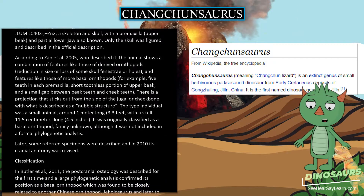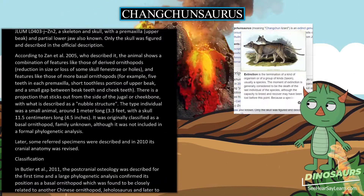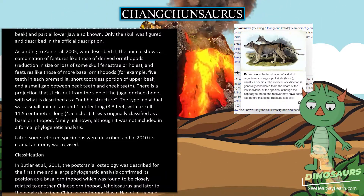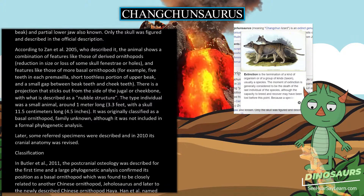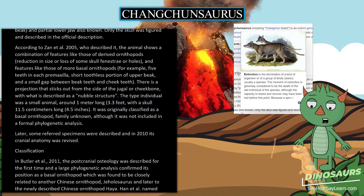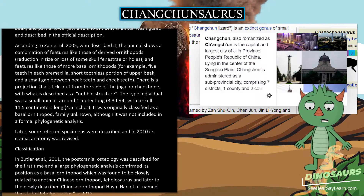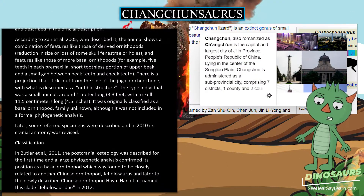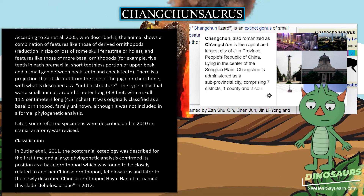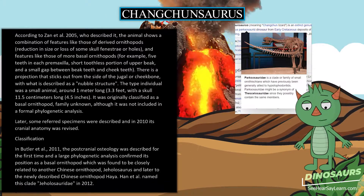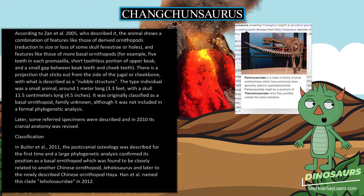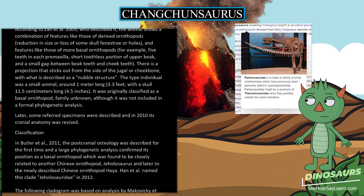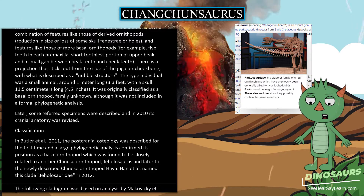The type individual was a small animal, around 1 meter long (3.3 feet), with a skull 11.5 centimeters long (4.5 inches). It was originally classified as a basal ornithopod, family unknown, although it was not included in a formal phylogenetic analysis.